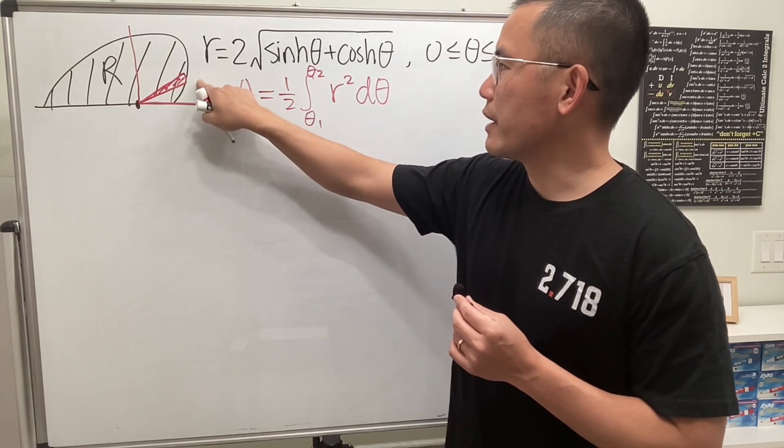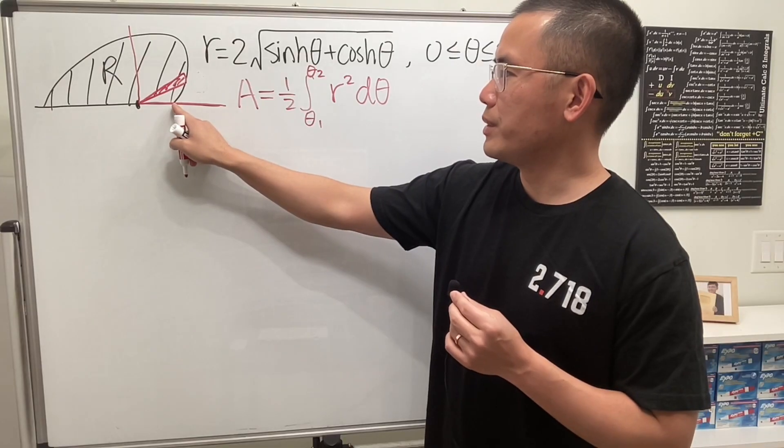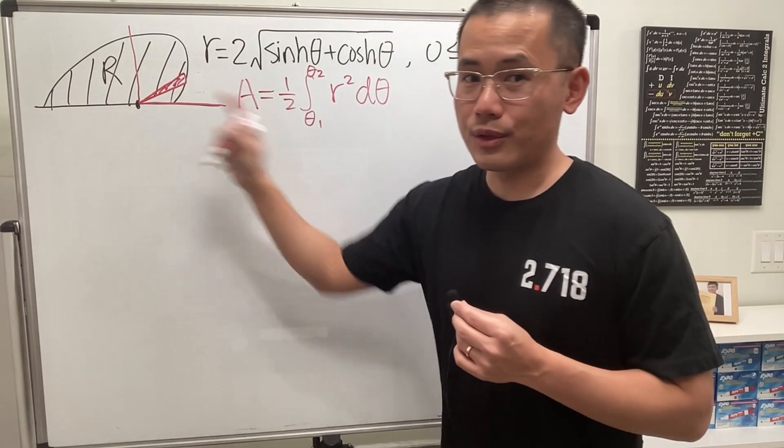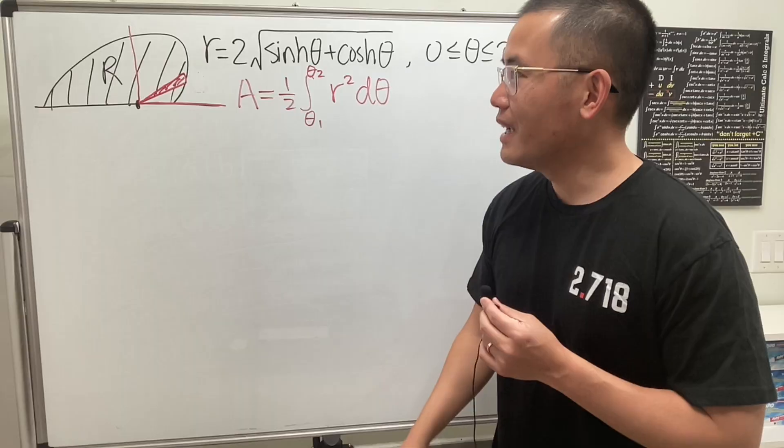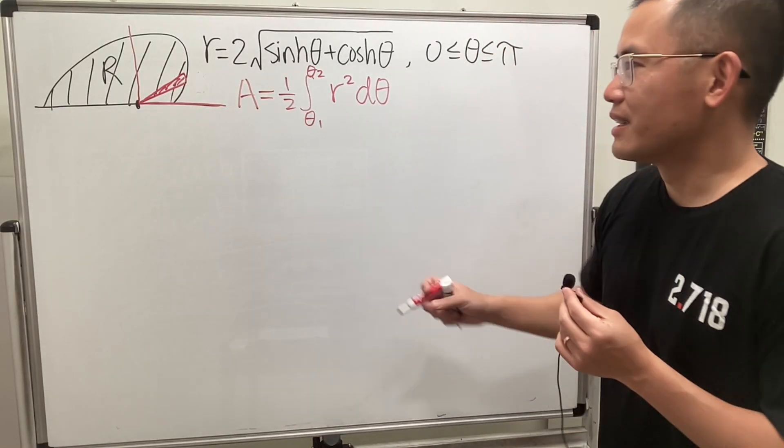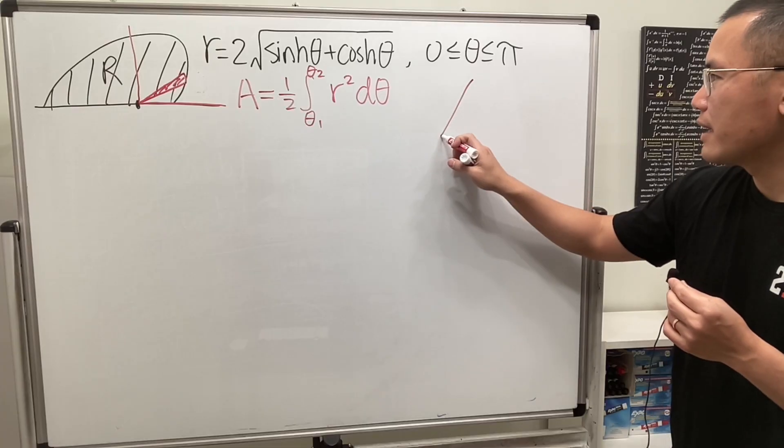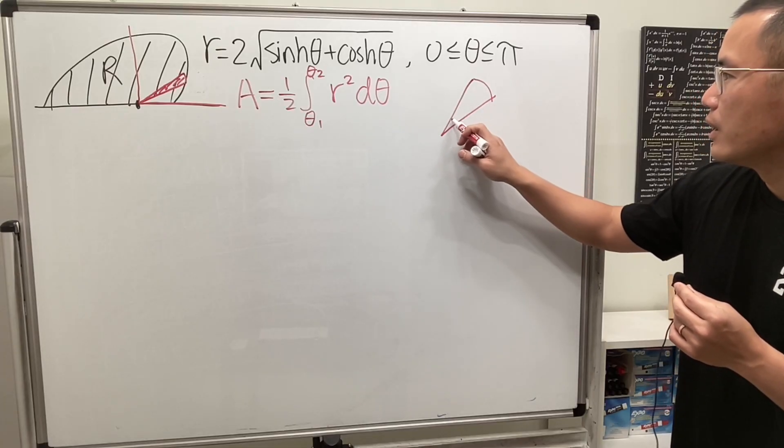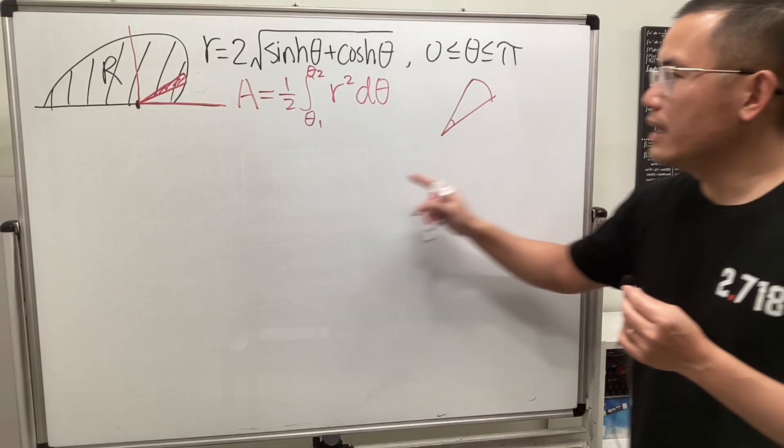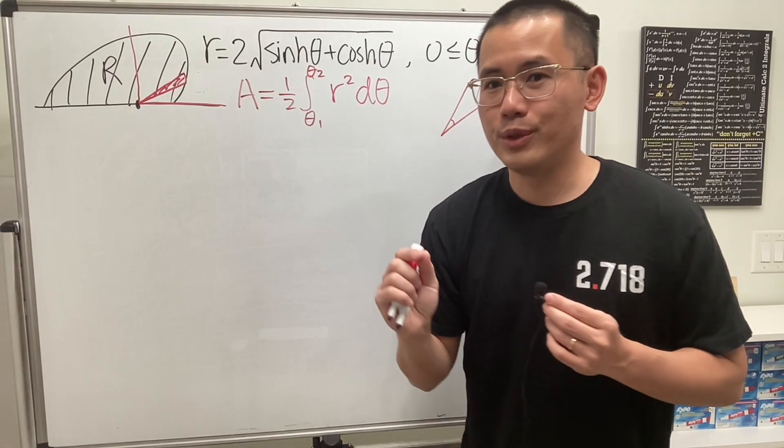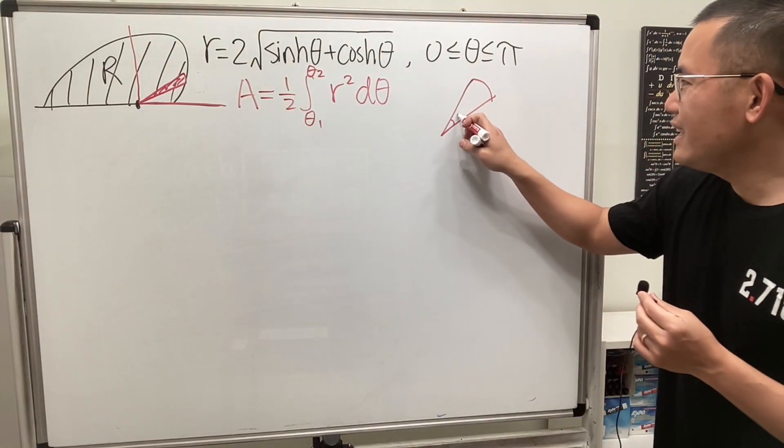So actually, let me not use theta 1 because theta 1, I want it to be here, and theta 2 is also going to be there. So the area of the sector right here is that, let me just remind you guys, if you have a sector, you have to look at this angle, but this angle is just a small change between the angles. So it's d theta.